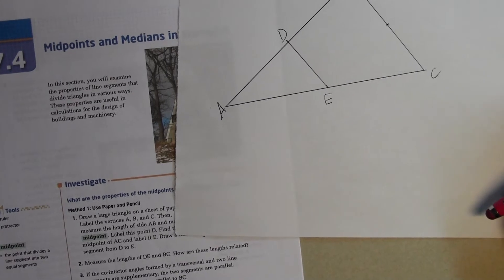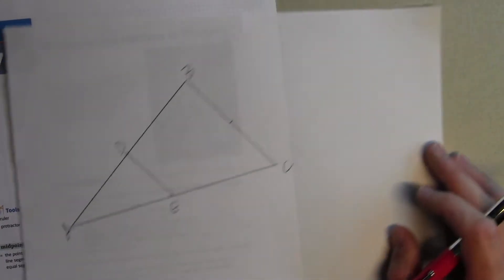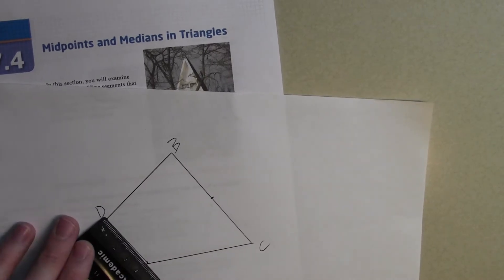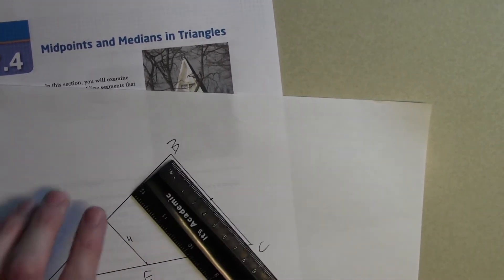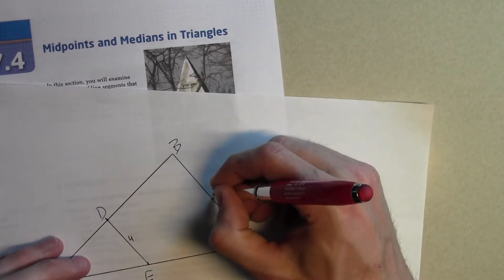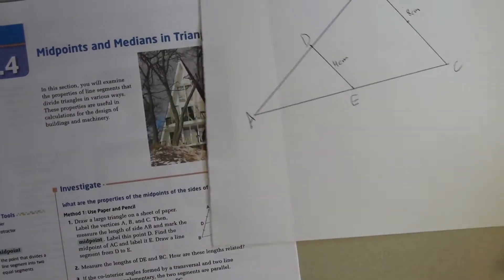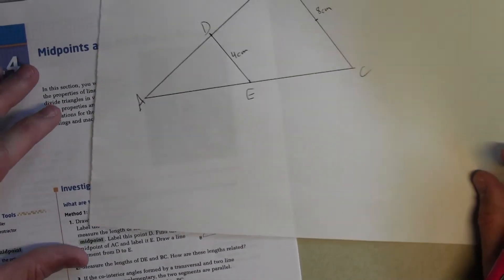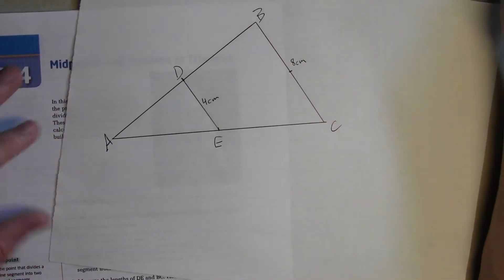Draw a line segment from D to E. Measure the lengths of DE and BC. How are these lengths related? So DE and BC I'm going to measure 4 centimeters and 8 centimeters. So how are they related? BC is twice the length of DE.